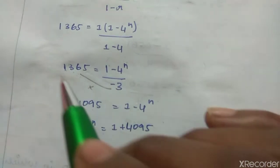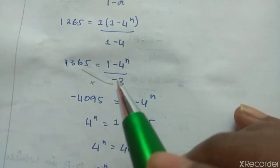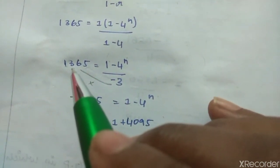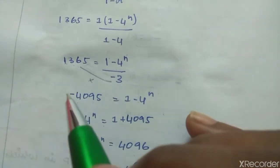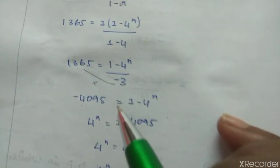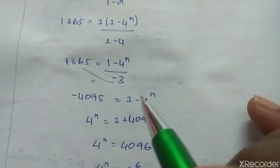Minus 3 cross multiply: left side minus 3 times 1365 equals minus 4095 equals 1 minus 4 power n.